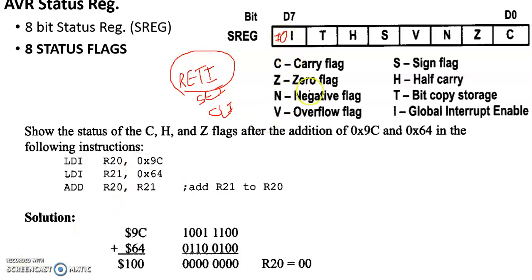So this is about the eight different flags in AVR microcontrollers.